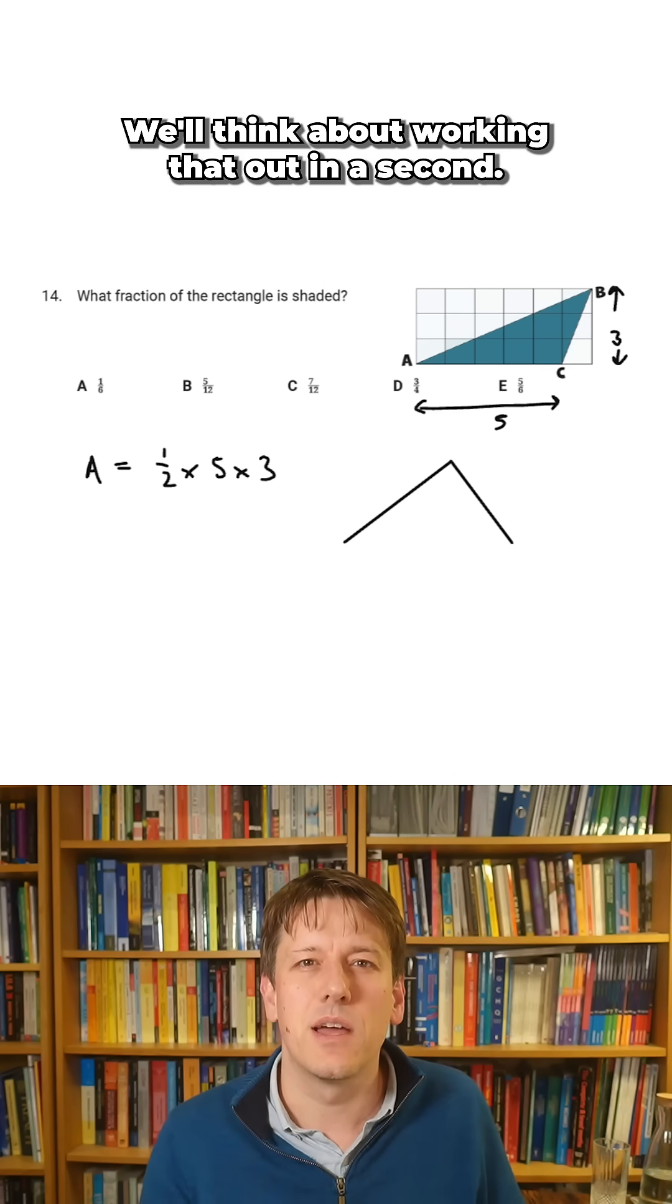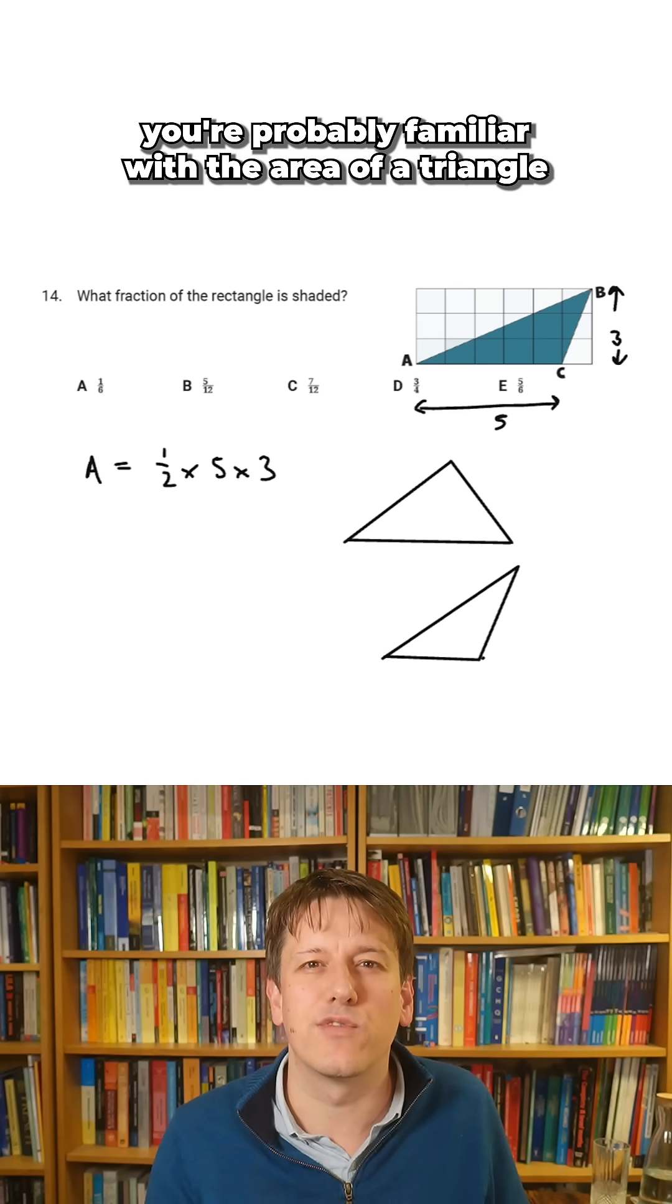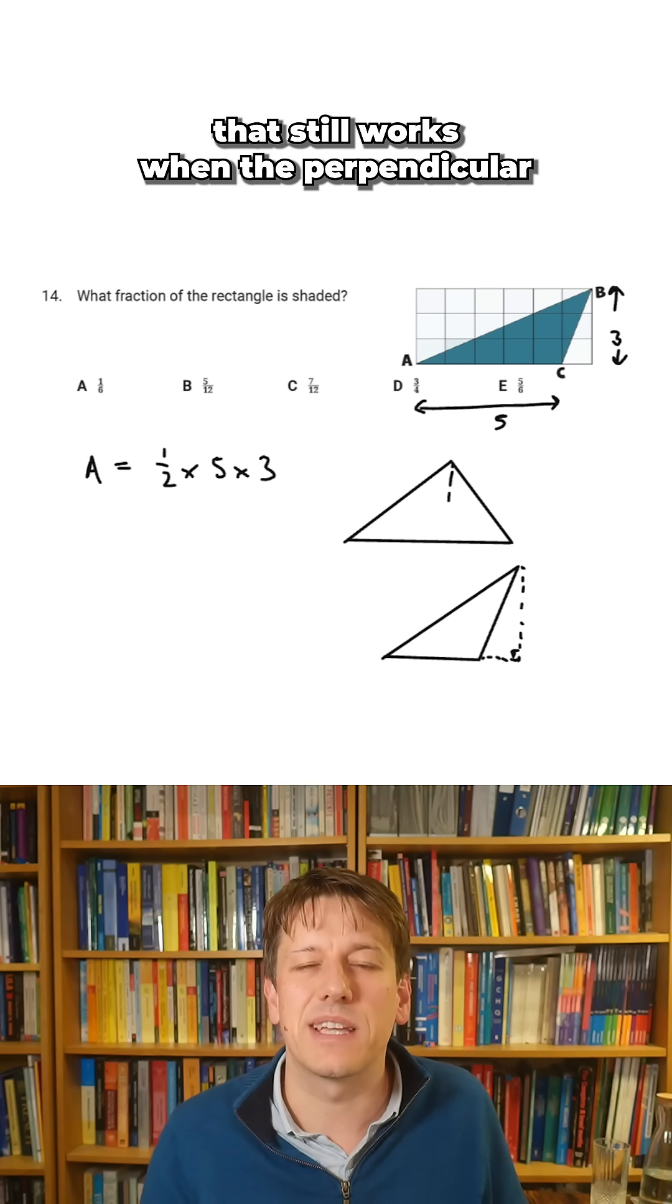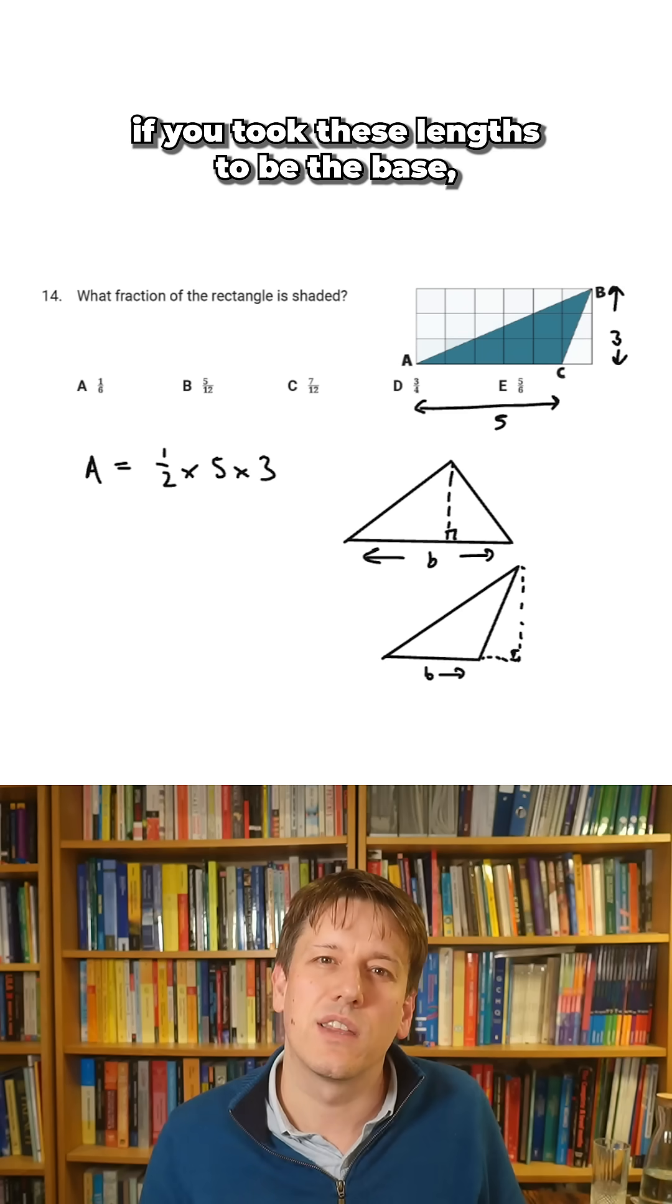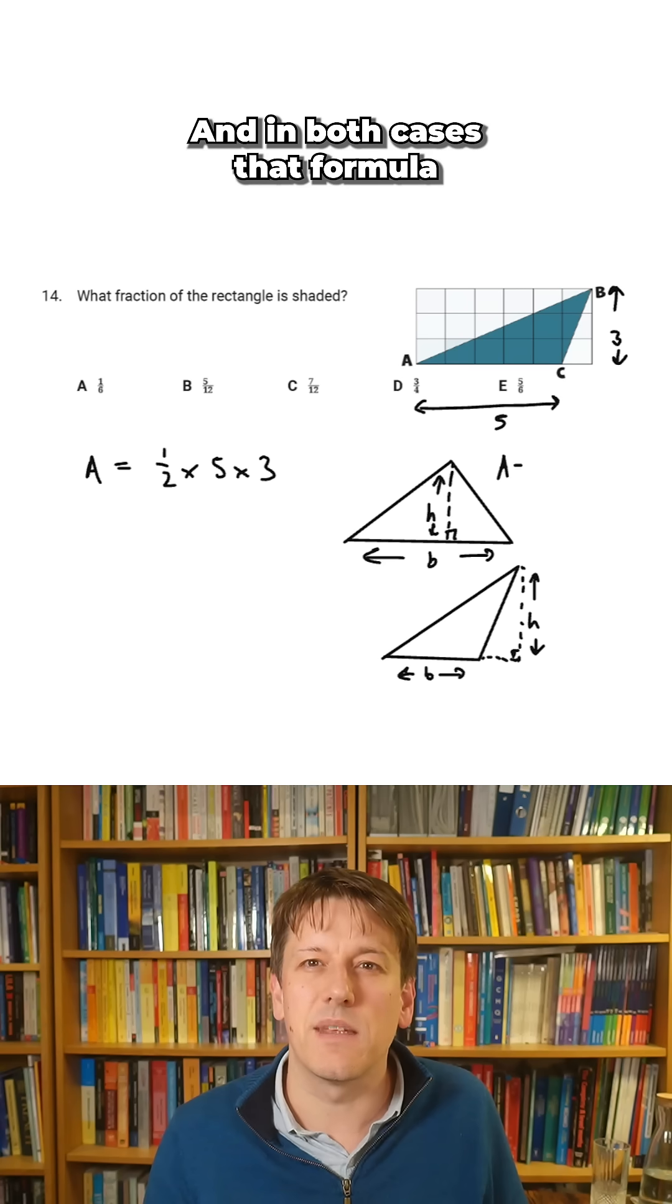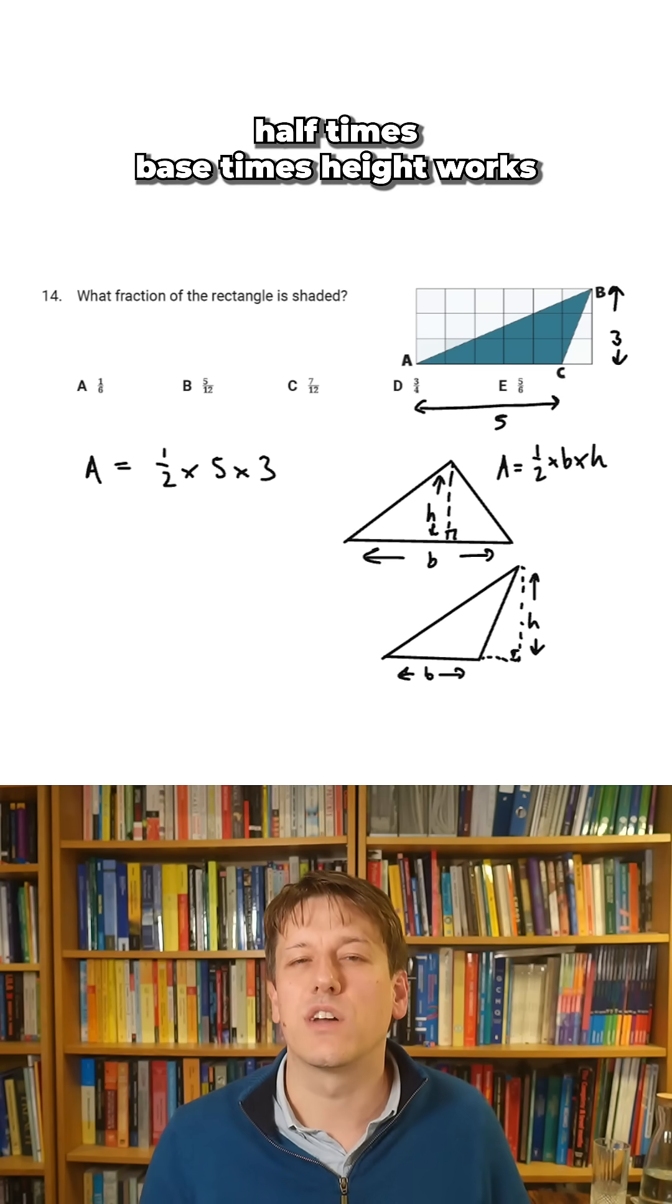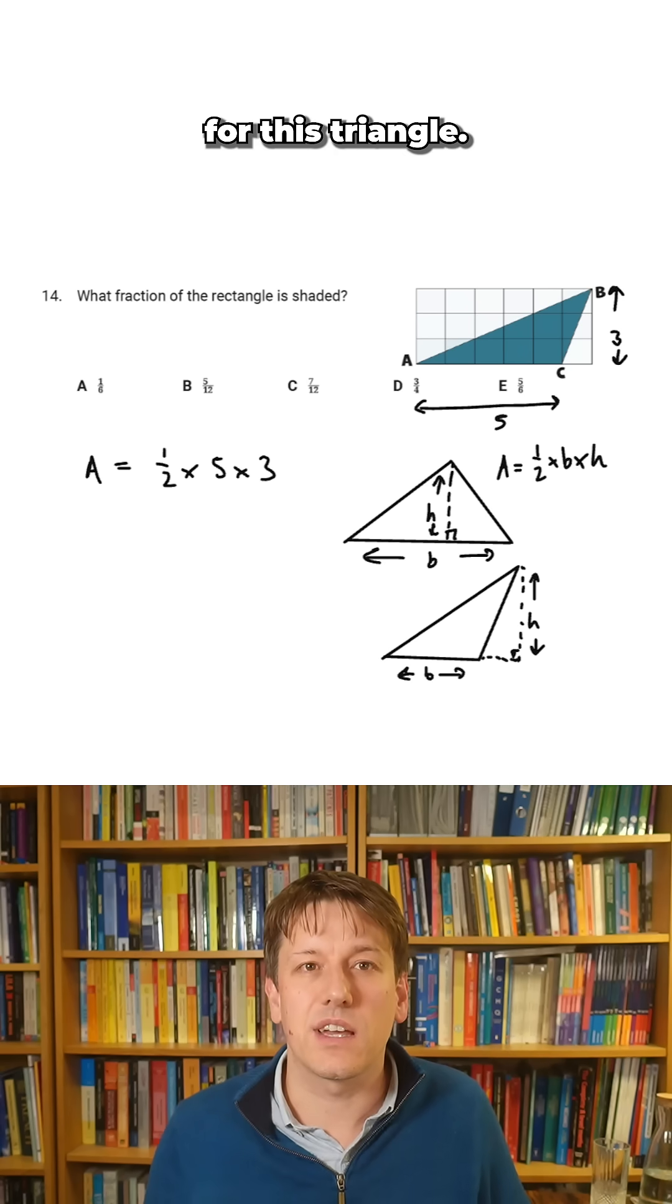We'll think about working that out in a second. But just to be clear here, you're probably familiar with the area of a triangle formula, half base times height. And just remember that still works when the perpendicular height lies outside of the base. So in these two different triangles here, if you took these lengths to be the base, the perpendicular height in the first triangle is here and the second triangle is here. And in both cases, that formula half times base times height works just as well here. So that three is the perpendicular height for this triangle.